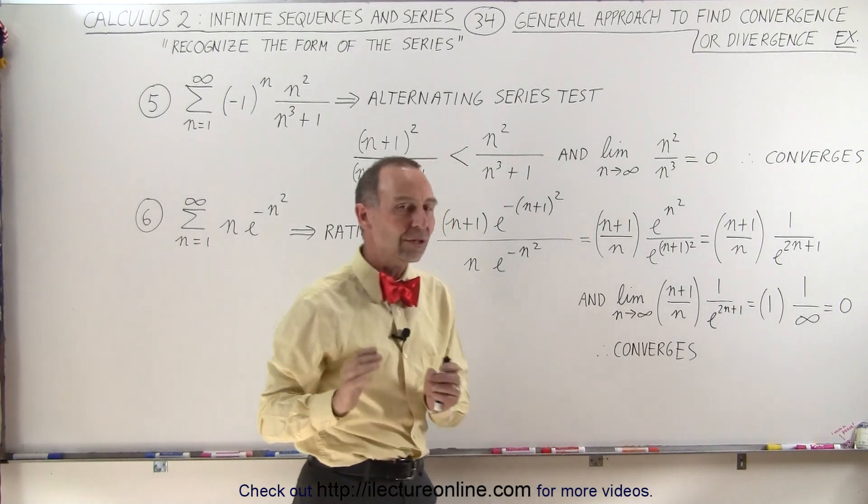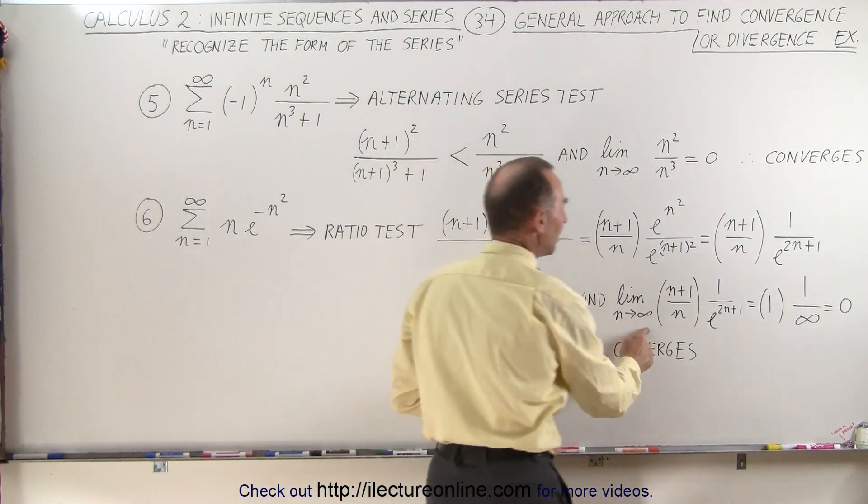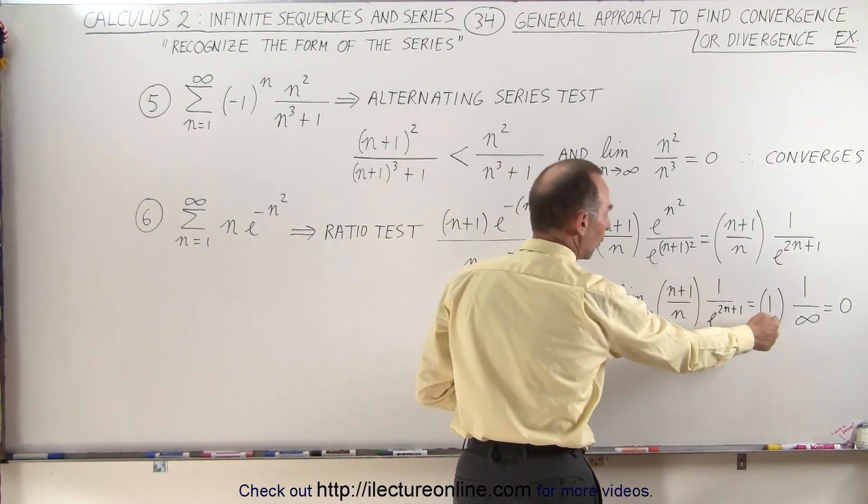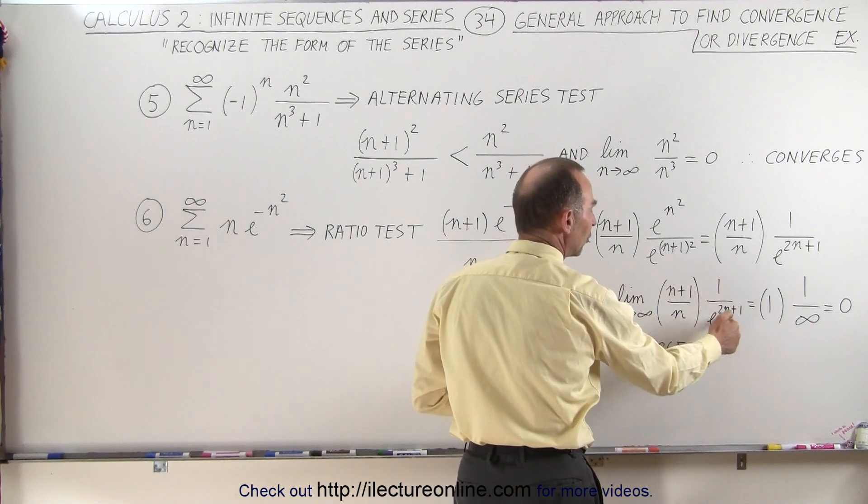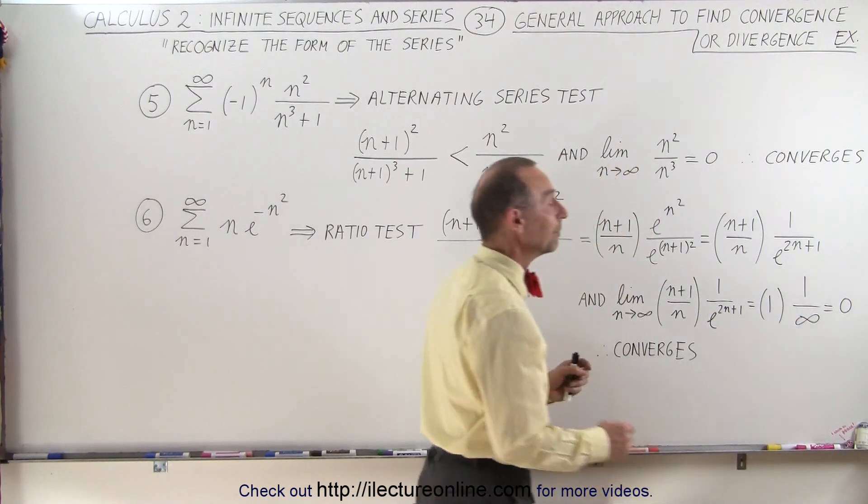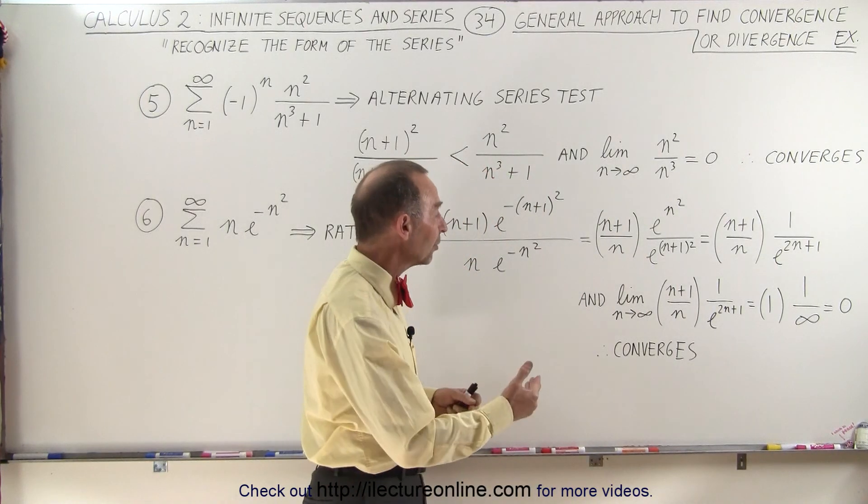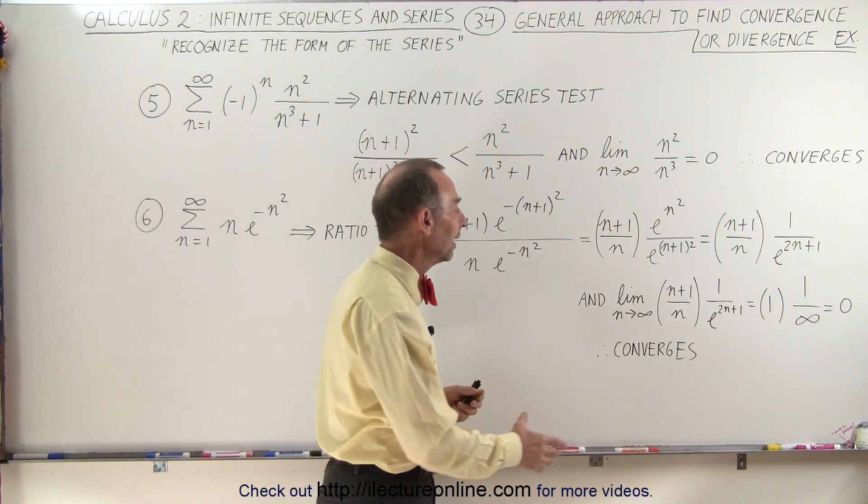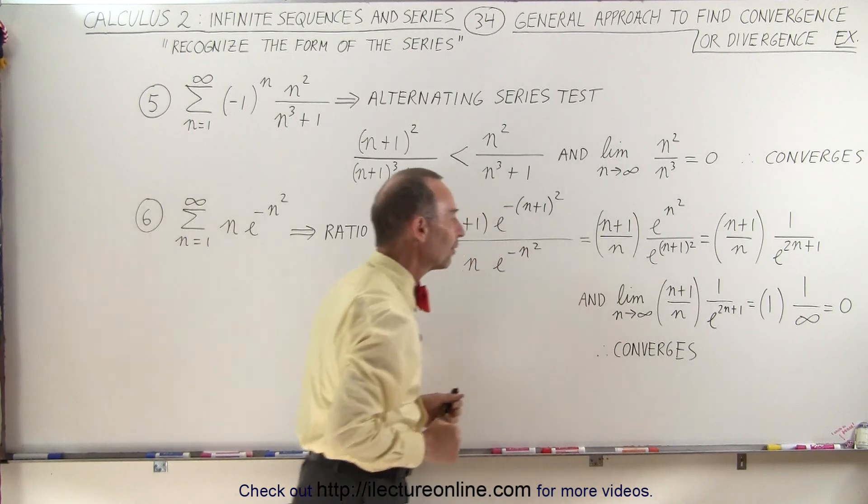Now we're going to take the limit as n goes to infinity. Of course, this term will become one, and here, one over e to the two n plus one, as n goes to infinity, becomes infinity in the denominator, which means that in the limit, those terms become zero, and therefore we know that the series converges.